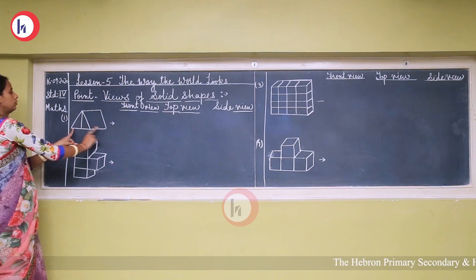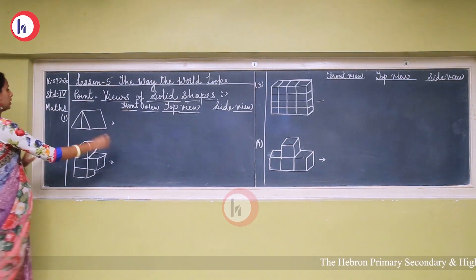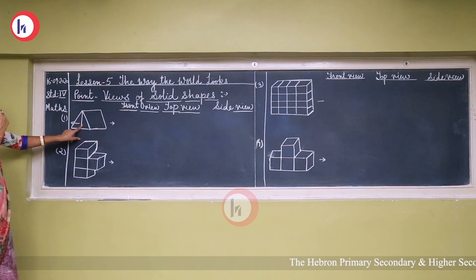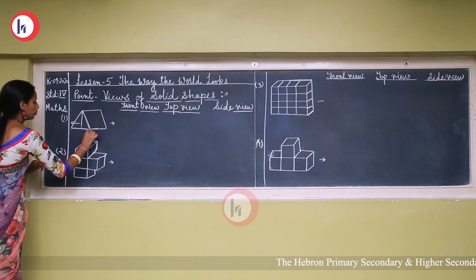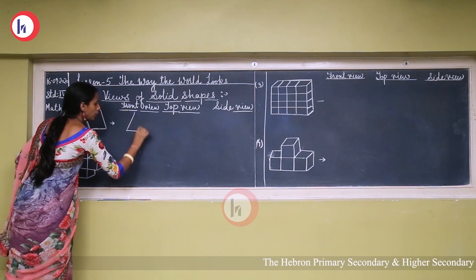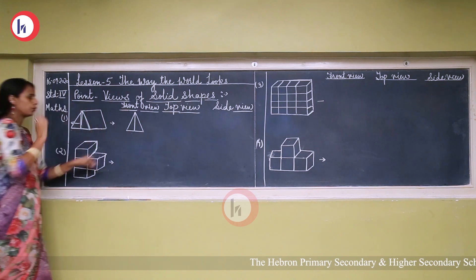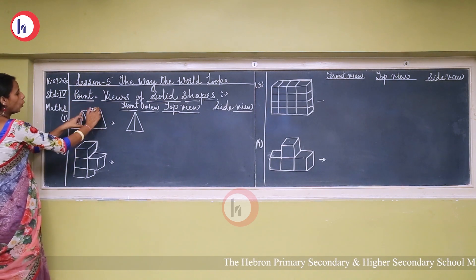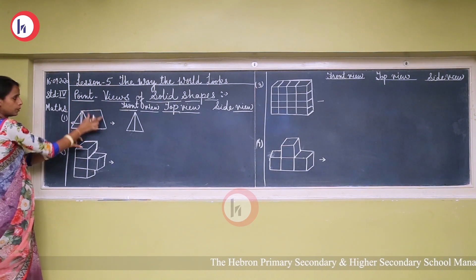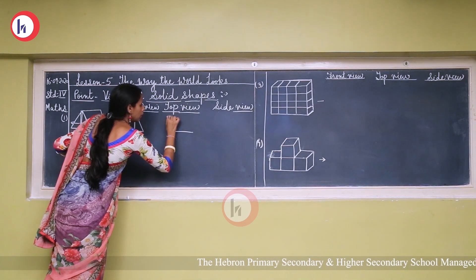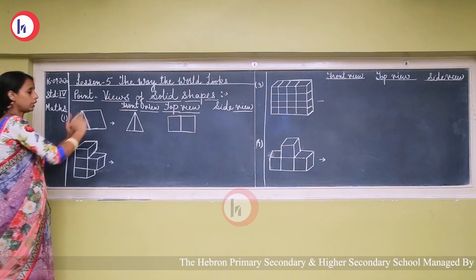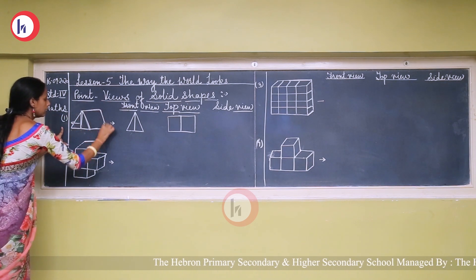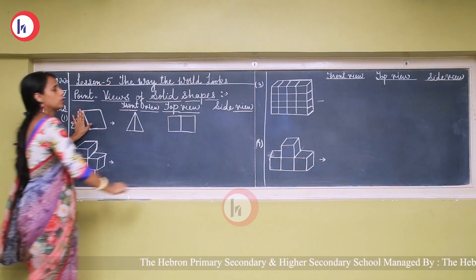Look at these shapes. Whenever we see from the front side only, we can see that portion — that is the front view. If you want to draw the front view, we draw like this. And after this, the top view — whenever we see from the top, only that portion is visible. And the side view — from the side only we can see this part.